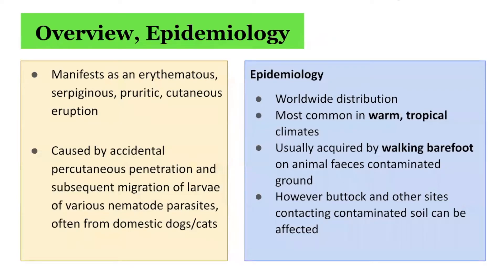Cutaneous larva migrans is caused by the larvae of hookworms that typically infect domestic dogs and cats. Although it has a worldwide distribution, it is most commonly seen in warm climates such as the southeastern United States, Central and South America, Africa, and other tropical areas.